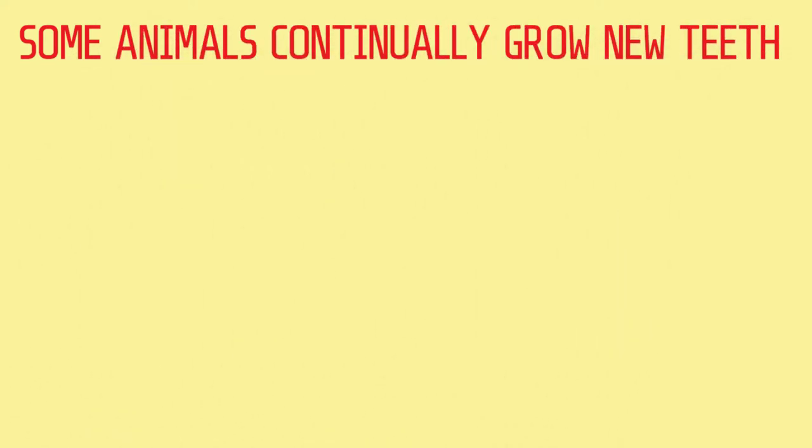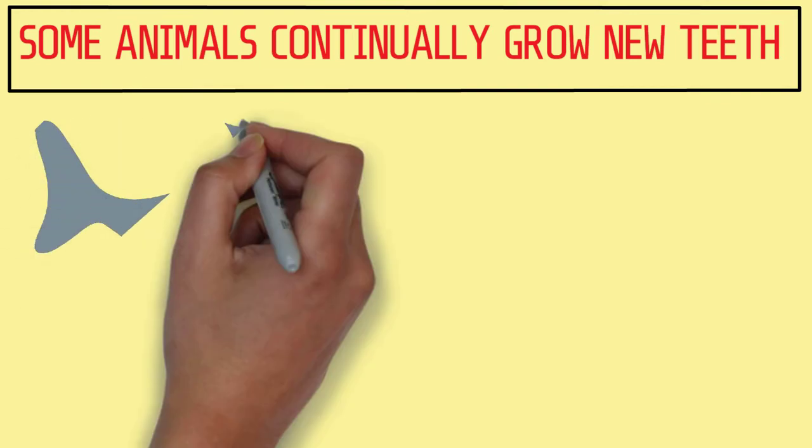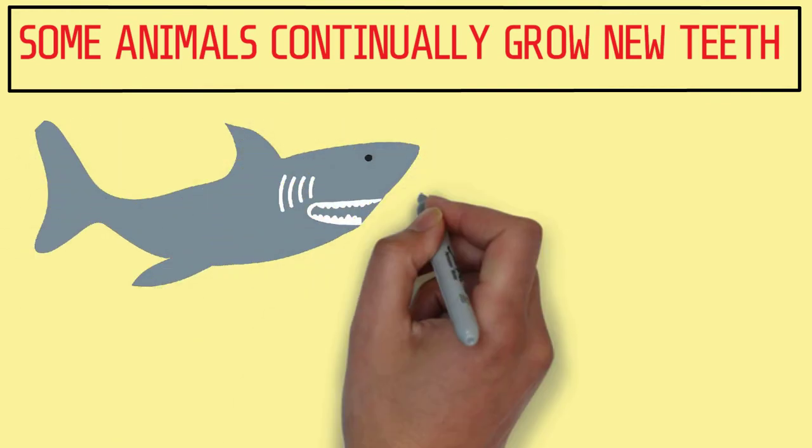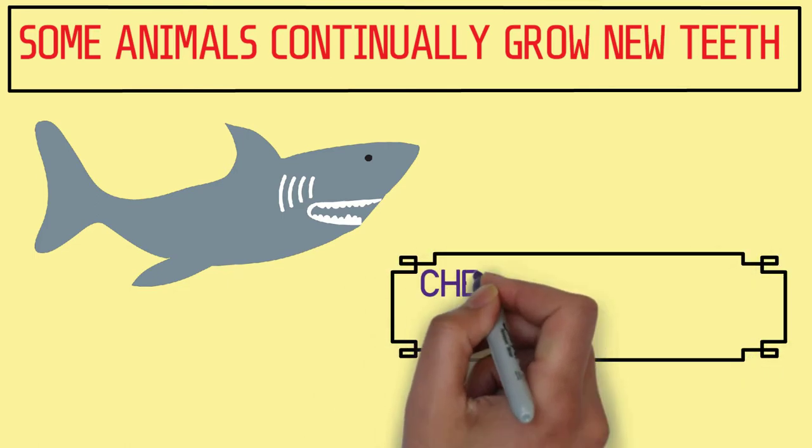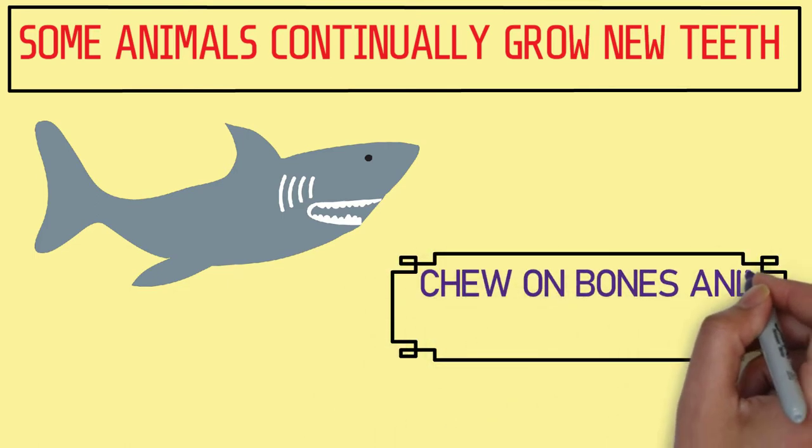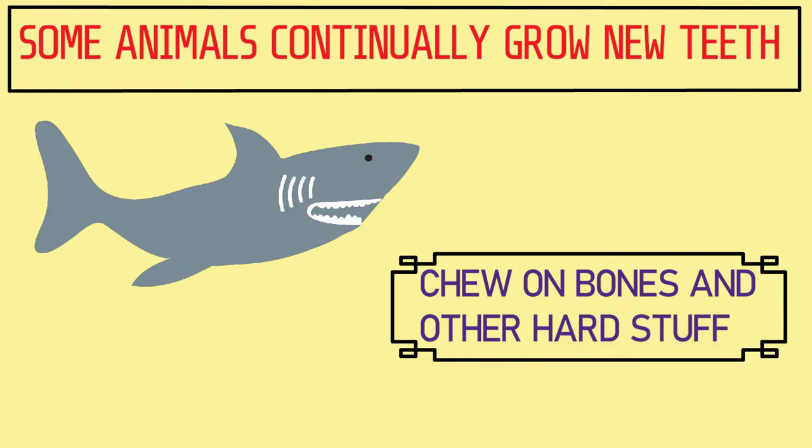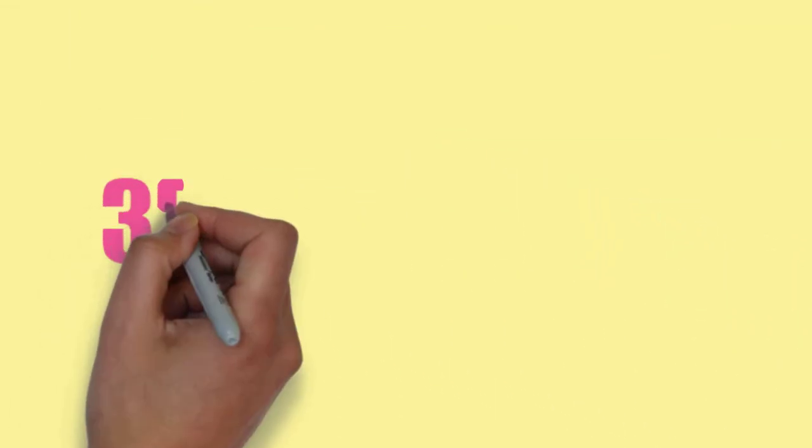Fact 2, some animals continually grow new teeth. This is true for some predators like sharks. Sharks will grow new teeth all the time because their teeth get old pretty quickly. This is because they constantly eat and chew on stuff like bones and other hard materials.